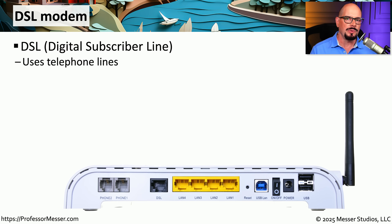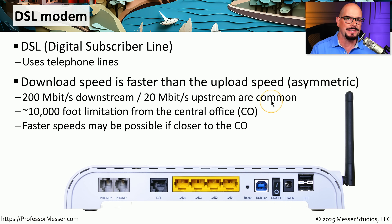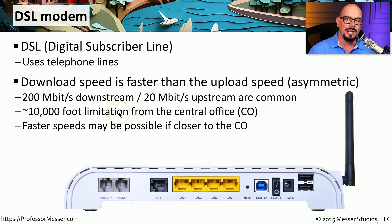Not everyone has the connectivity of a cable network, so instead you may be using a traditional telephone network, and you can run a digital internet connection over that using DSL or Digital Subscriber Line. This uses the same wires as your analog telephone but also sends digital signals across it at the same time. DSL can give you reasonably good throughput — it's not uncommon to see 200 megabits downstream and 20 megabits upstream. That throughput is affected by your distance from the central office, with a limitation of approximately 10,000 feet. The closer you get to the central office, the faster the download and upload speeds will be on the DSL network.